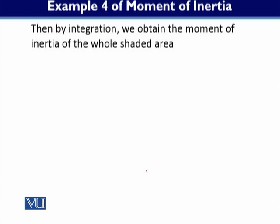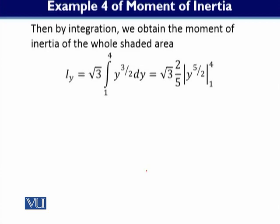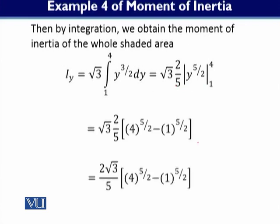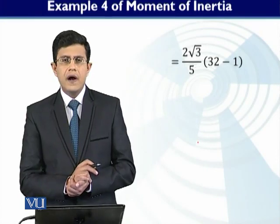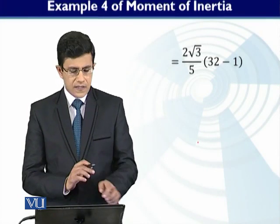By integration we obtain the moment of inertia of the whole shaded area. I_y = √3 integrated from 1 to 4. Using limits 1 to 4 and solving the integration, you arrive at 2√3/5 · (32 − 1). Solving this gives approximately 21.5 in⁴ as the final answer.